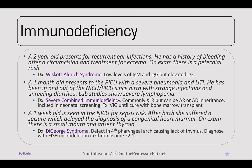A one-year-old presents to the PICU with severe pneumonia and UTI. He's had strange infections and unrelenting diarrhea since birth. Lab studies show lymphopenia. This is SCID — severe combined immunodeficiency. It's most commonly X-linked recessive, but autosomal recessive and dominant forms exist. It is now included in neonatal screening, and treatment is IVIG until a cure with bone marrow transplant.